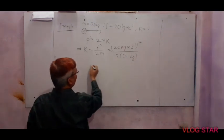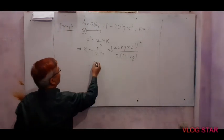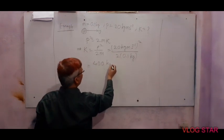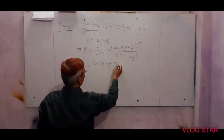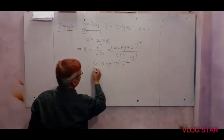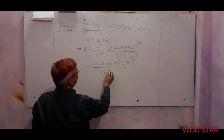After simplifying, we will get square of 20, which is 400, and square of unit also kg squared meter squared per second squared. And here 0.2 kg.